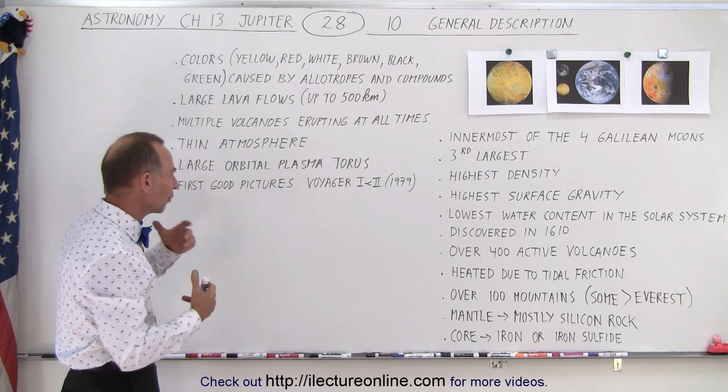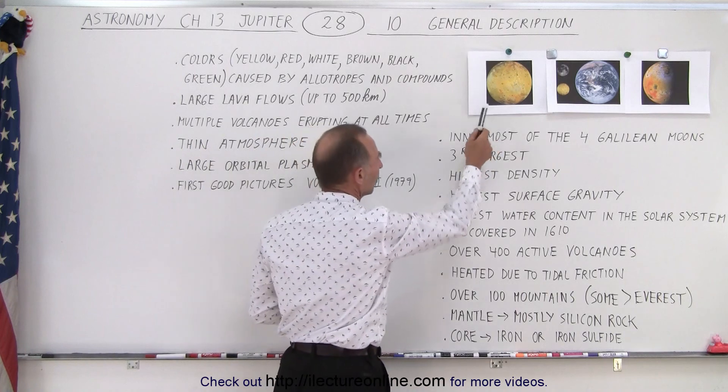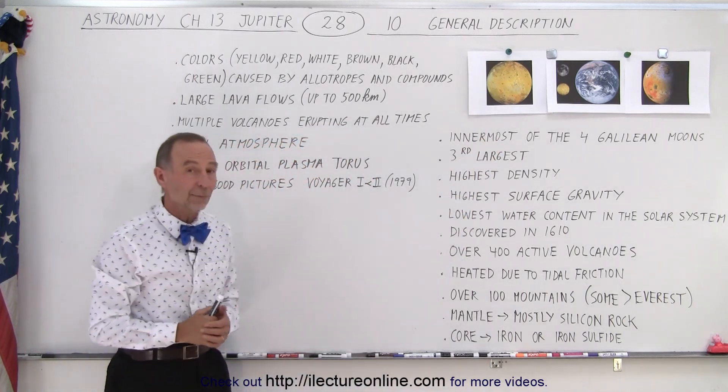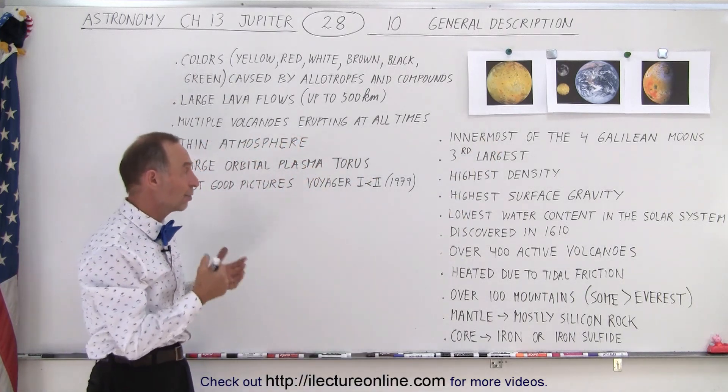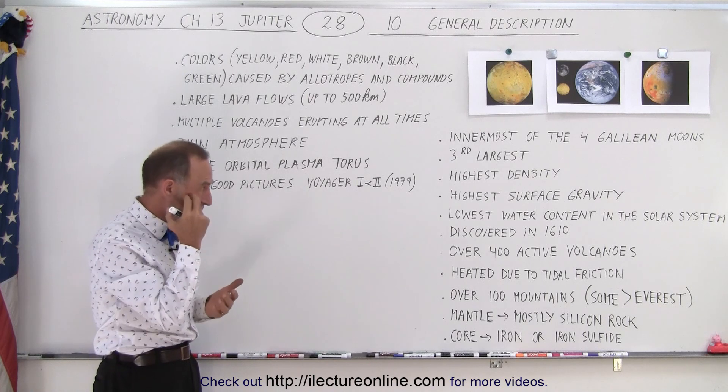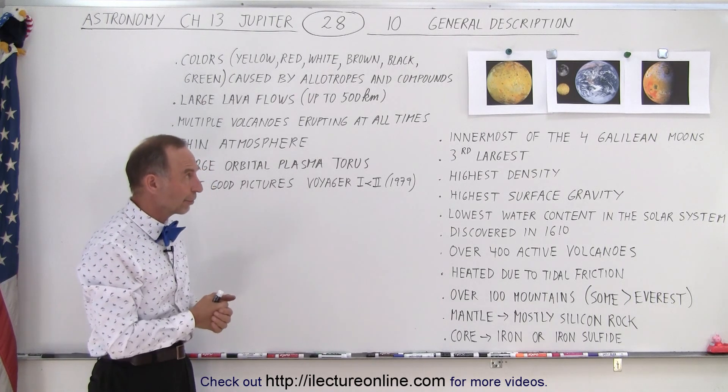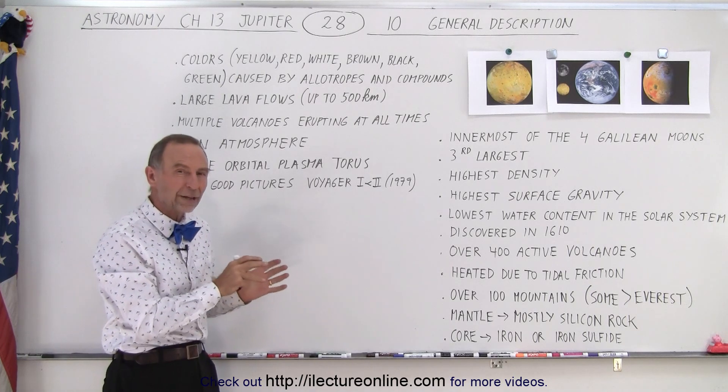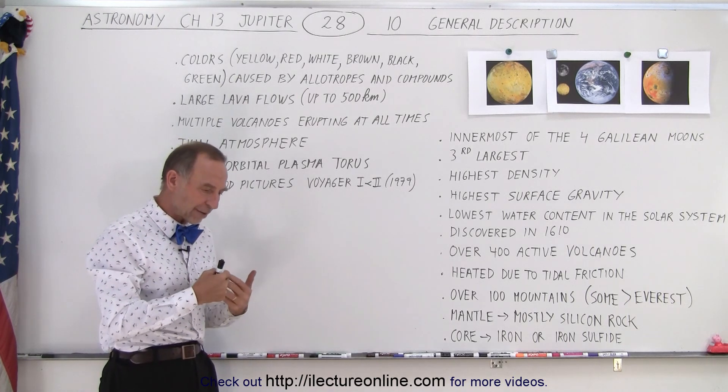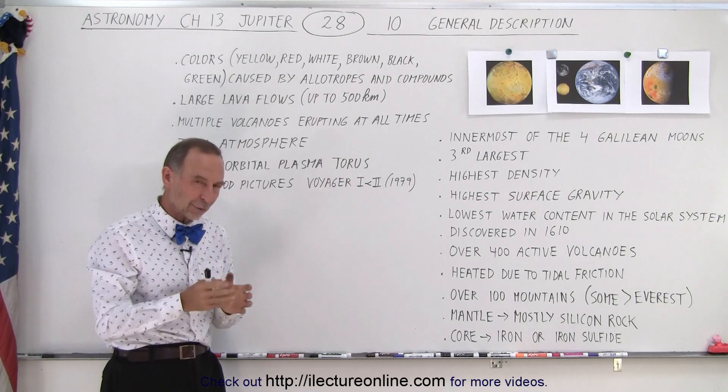And then the first good pictures that we took of the moon Io were taken in 1979 when Voyager 1 and Voyager 2 made it to Jupiter. Voyager 1 especially got very close to the planet and was able to take some really nice photographs. Voyager 2 didn't get quite as close. There were some spacecraft that made it there earlier about six years earlier.